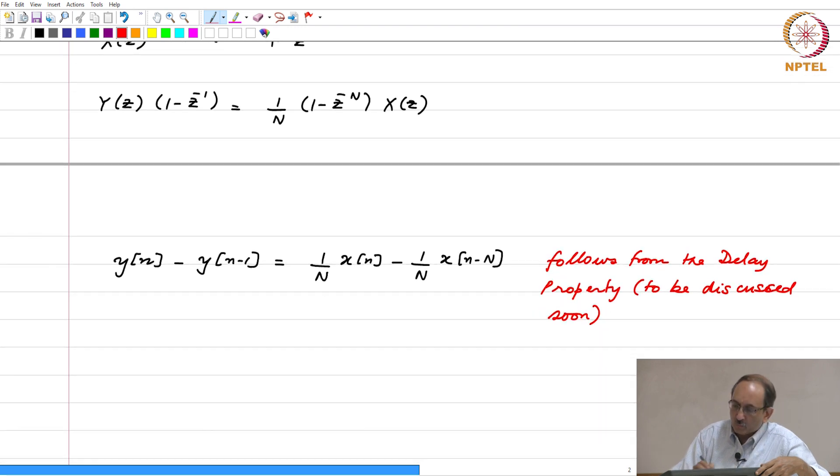Assuming for the moment that this is indeed true, you get this, and rearranging this, we can see that this is exactly the same equation that we had seen earlier. This is y of n is nothing but y of n minus 1.